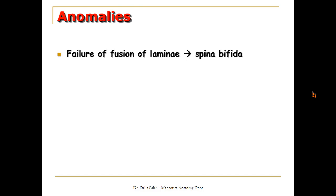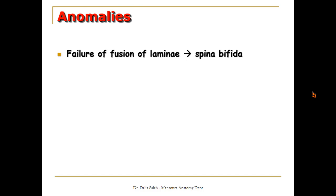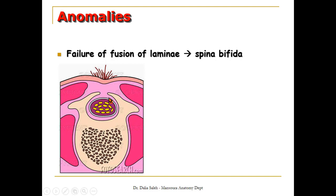Finally, the anomalies of the vertebral column. Anomalies range from failure of fusion of the two laminae — in this case we end up with spina bifida in its various types. Spina bifida occulta involves a missing spine and failure of fusion of the two laminae, but the spinal cord, spinal nerves, and meninges are still in their place. It is only presented on the surface of the skin by an abnormal tuft of hair, dimple, or similar finding.